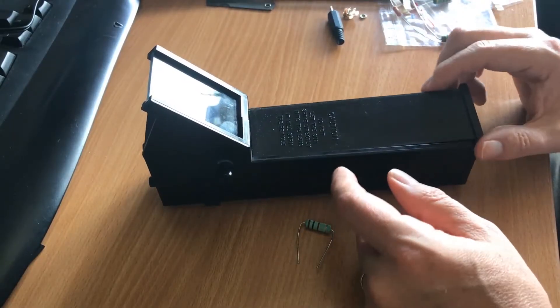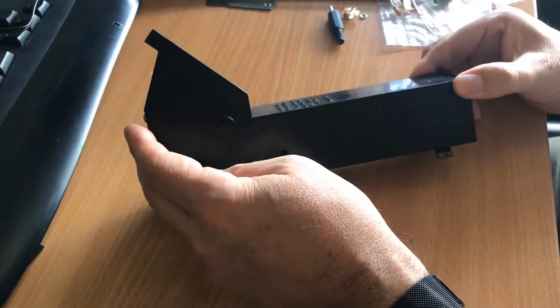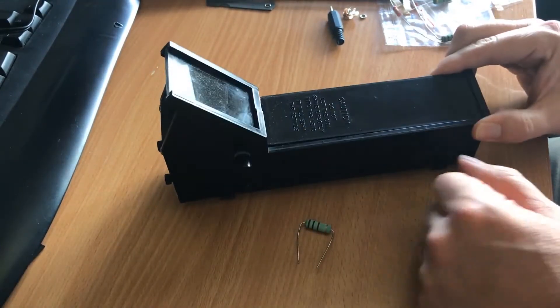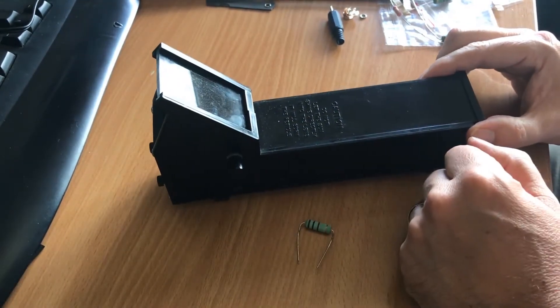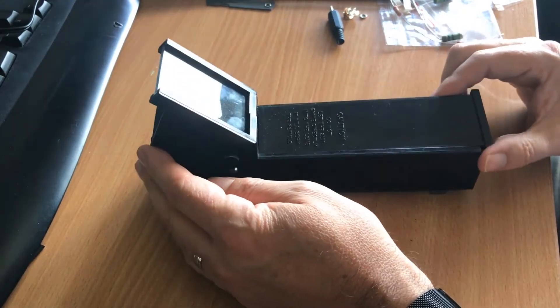Hi everybody, so the TELRAD is an absolutely wonderful piece of kit, projecting the red circles up onto the night sky to allow you to align your telescope.